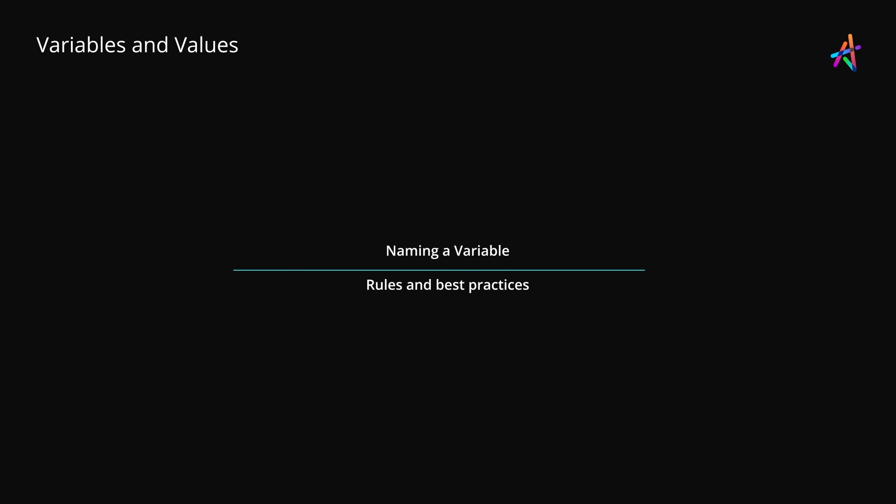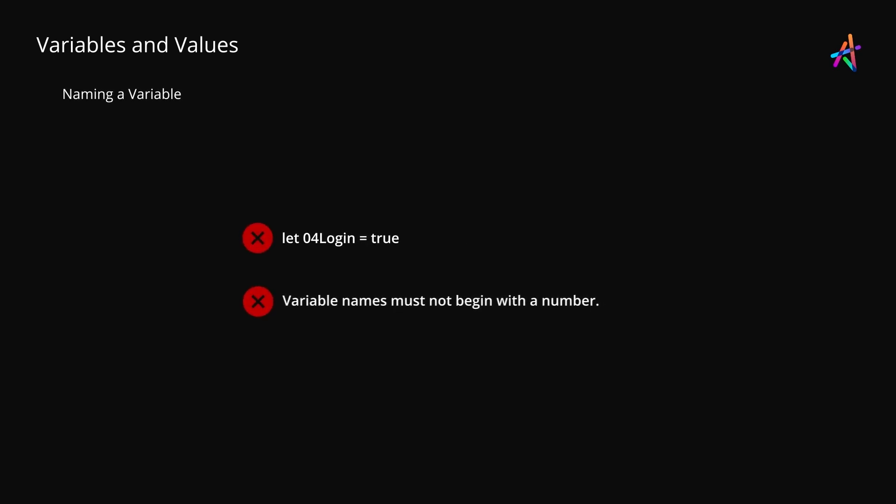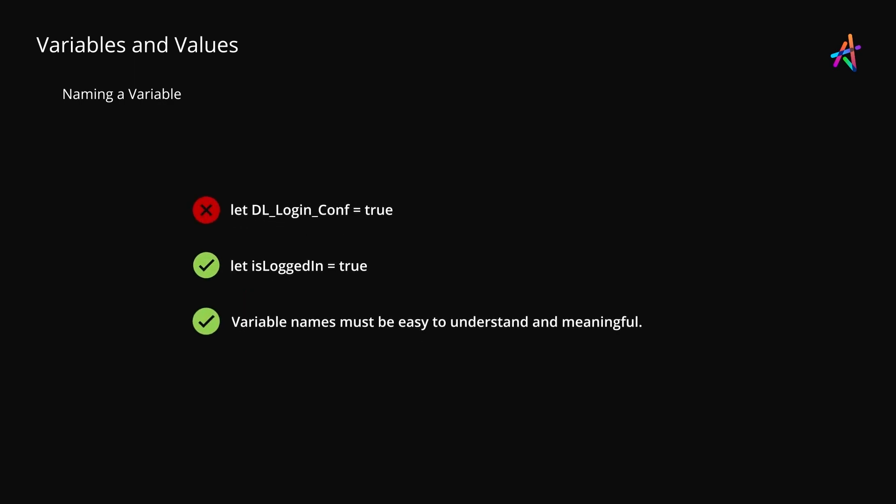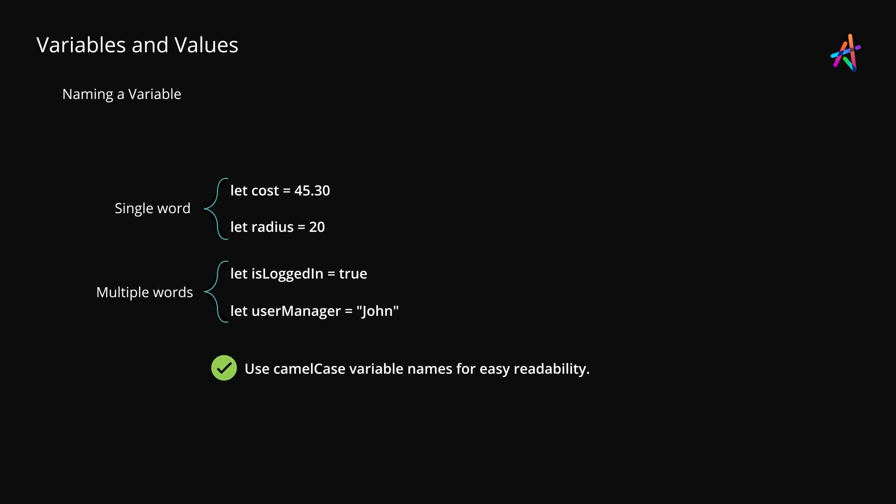Let's quickly talk about some things to keep in mind when defining the name of a variable in your programs. Variable names must never begin with a number — names like those are typically considered invalid. Always begin with a character and not a number. Variable names should be meaningful; you may not be the only one working through your code, and in a team it helps to follow a standard and meaningful convention that makes sense to everyone. As a recommended practice, begin variable names with a lowercase character, and the most popular convention I would recommend is camel case.